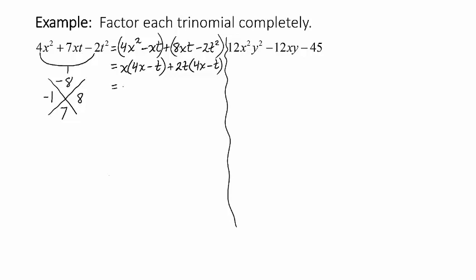Okay, now what's common to both of the terms? Well, 4x - t. So I'm going to factor out 4x - t from both terms and the remaining will be x + 2t.